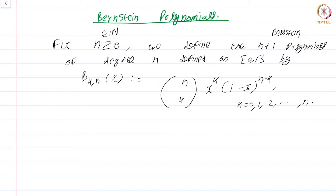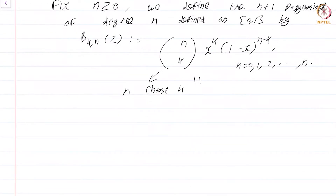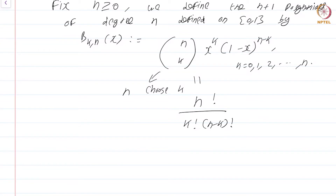Now, n choose k — you are familiar with this from basic probability theory from high school — is just a shortcut for n factorial divided by k factorial times (n minus k) factorial. Recall that n choose k is nothing but the number of ways in which you can choose k objects from a set of n objects.